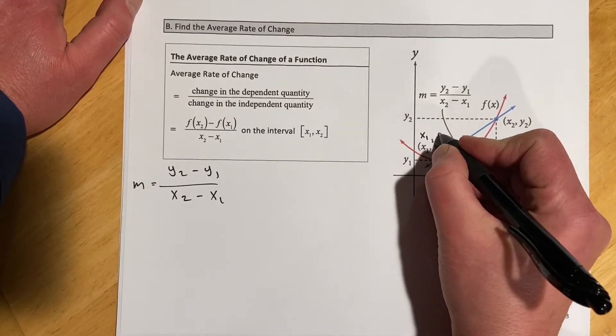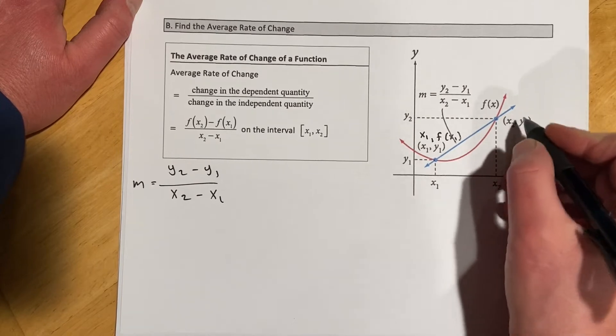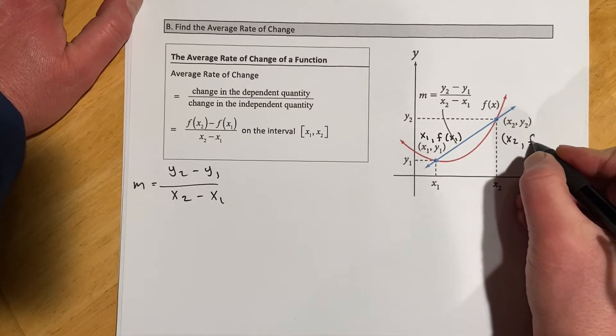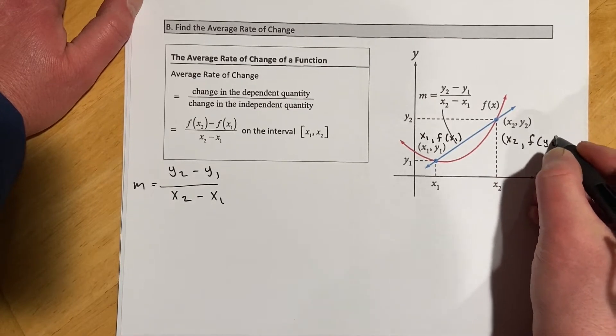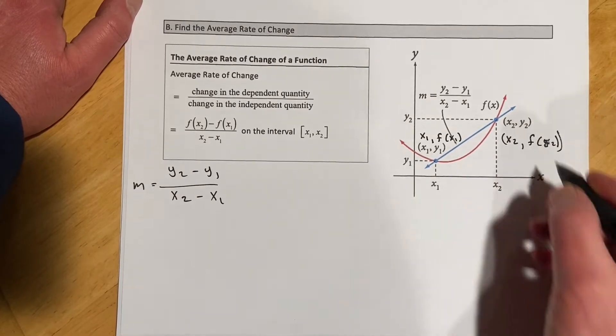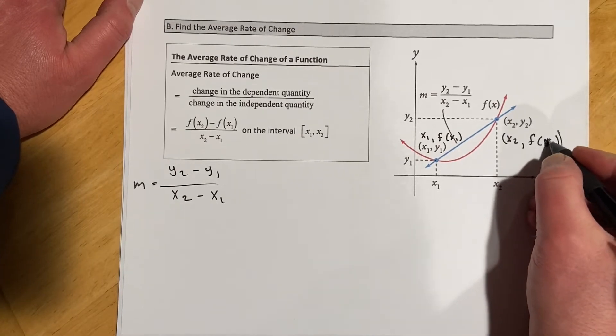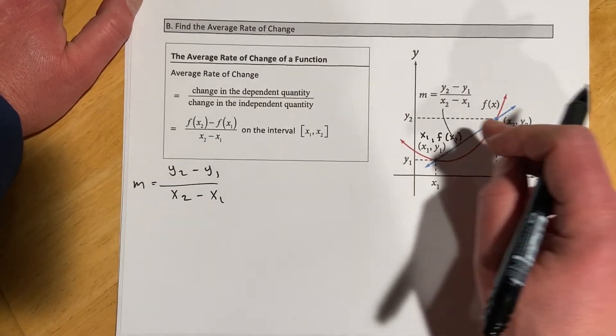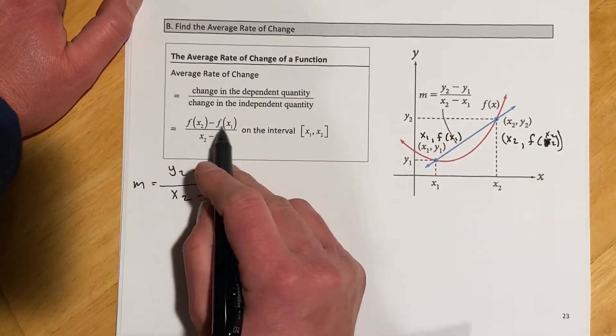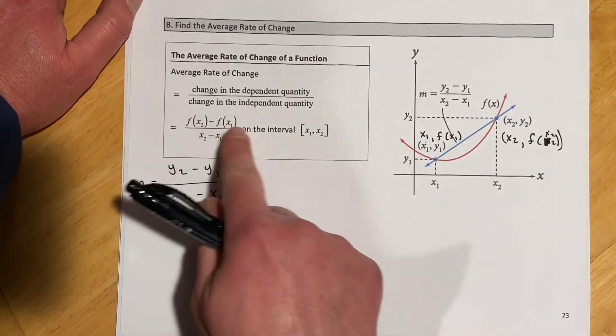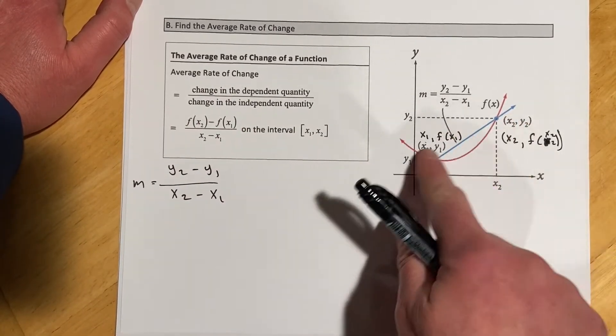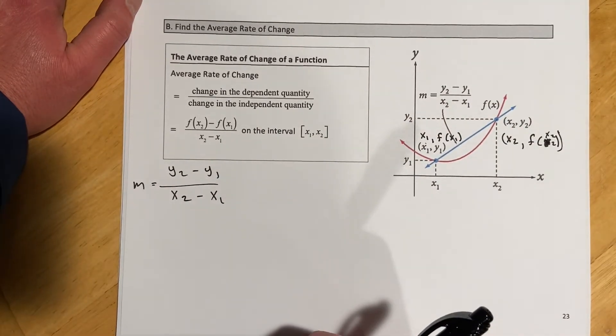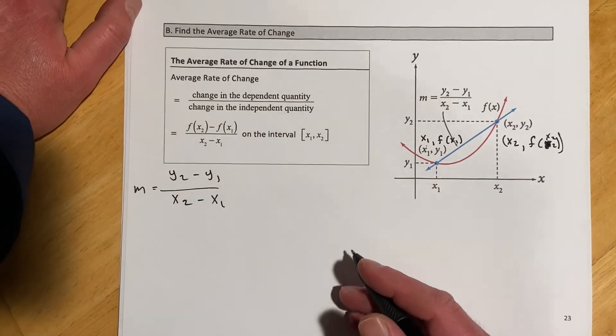If I'm putting in an x1, instead of getting out a y1, now I'm going to get out an f of x1. And here if I'm putting in an x2, instead of getting out a y2, now I'm going to call that f of x2. So what I get is f of x2 minus f of x1 over x2 minus x1. This is the exact same formula, it's just in function notation instead of written as ordered pairs.